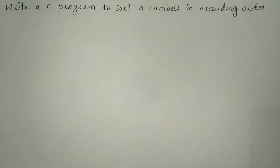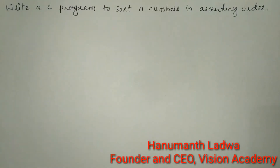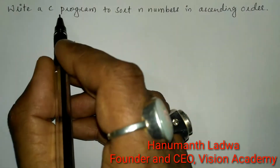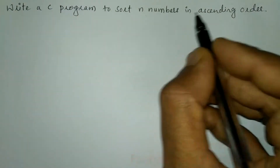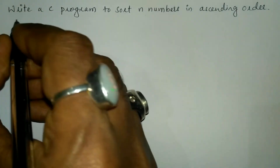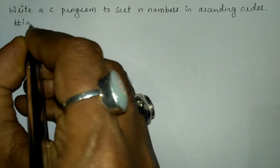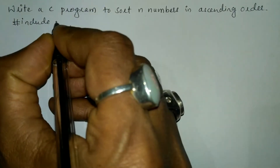Hello and welcome to Vision Academy. My name is Hanmanth Ladwa and in this video we are going to write a C program to sort N numbers in ascending order. Here let us begin with the preprocessor directives — hash include.